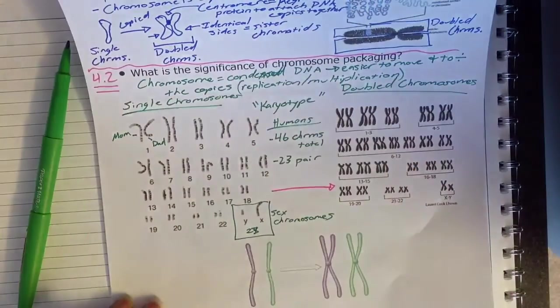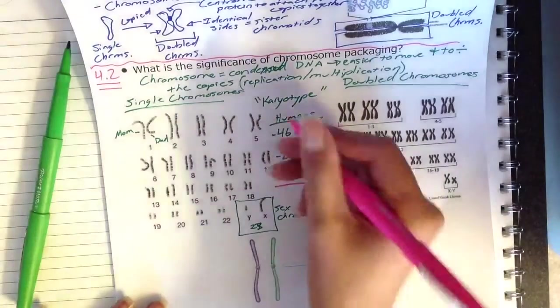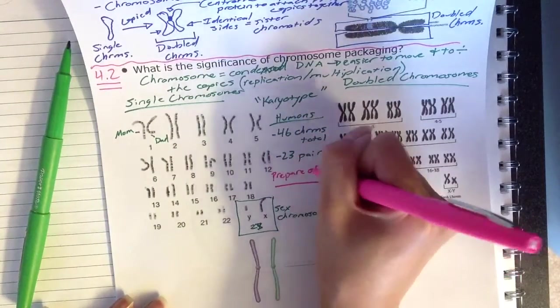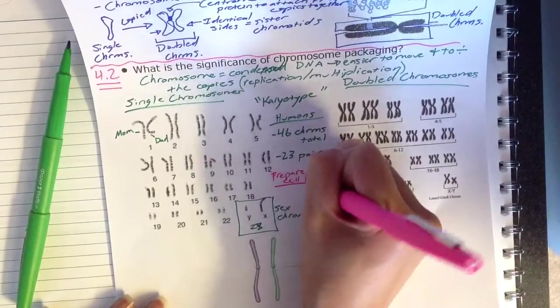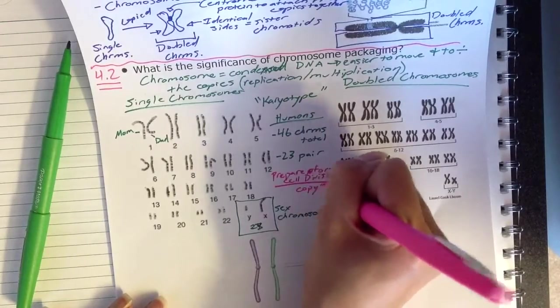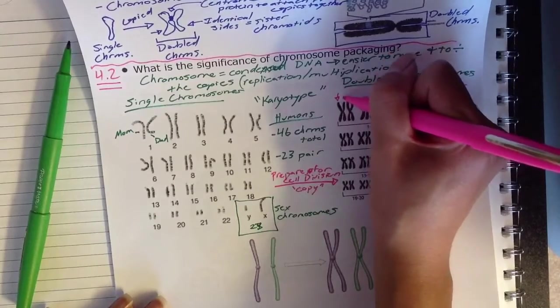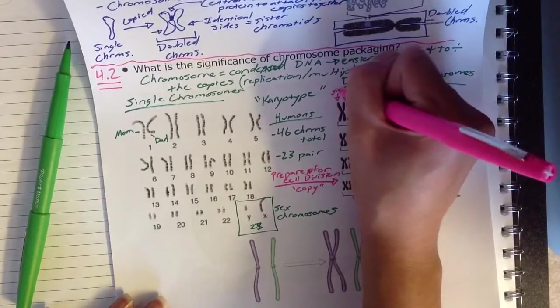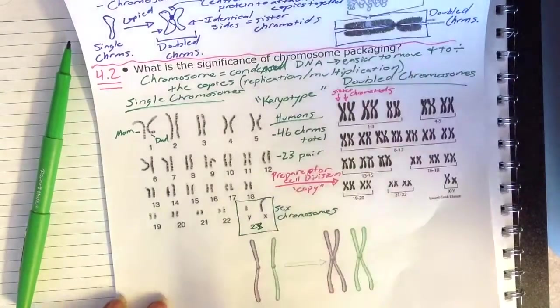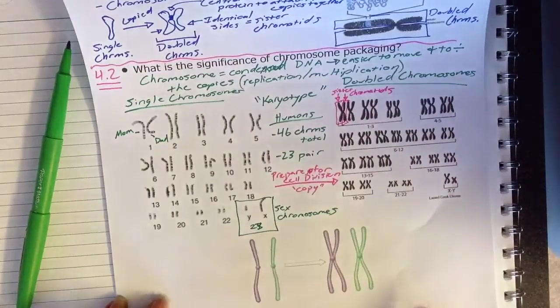So why would we have our chromosomes doubling? Our chromosomes will double or replicate to prepare for cell division. So they'll copy each other. And hopefully you remember that on either side here, these are identical sister chromatids. And so one side on the left and one side on the right will have identical information.